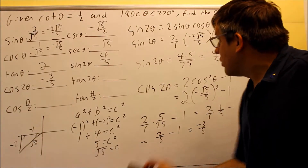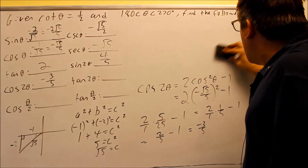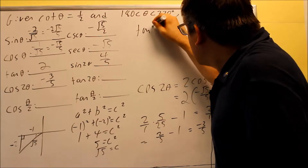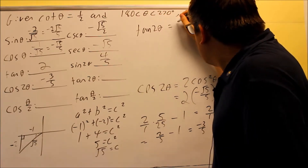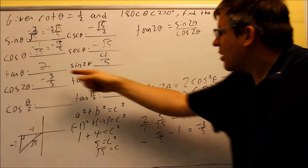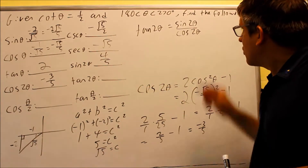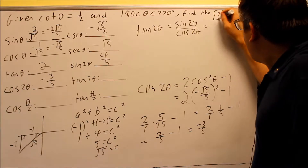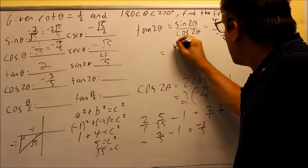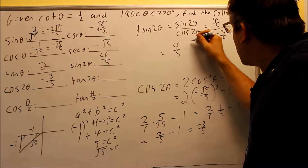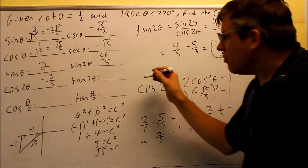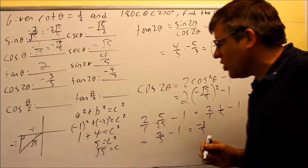For tangent 2 theta, instead of using the double angle formula directly, I'll use tangent 2 theta equals sine 2 theta over cosine 2 theta. We already found both of those: sine 2 theta is 4 fifths and cosine 2 theta is negative 3 fifths. Dividing: 4 fifths over negative 3 fifths — flip the bottom fraction to get negative 5 thirds, the fives cancel, and I get negative 4 thirds. So tangent 2 theta equals negative 4 thirds.